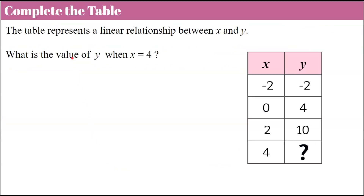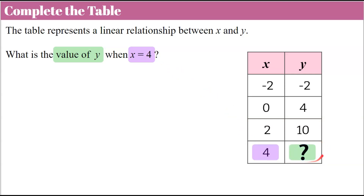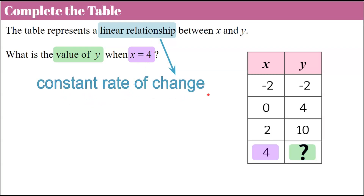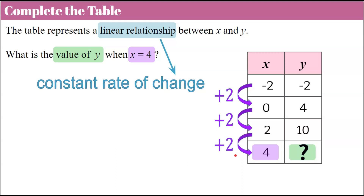Let's go on and talk about completing the table. This table models a linear relationship. We're told the table represents a linear relationship between X and Y, and we're asked: what is the value of Y when X is equal to 4? We want to identify where X equals 4 and find its corresponding Y value. A linear relationship always has a constant rate of change. Looking at X: negative 2 to 0 is an increase of 2, 0 to 2 add 2, 2 to 4 another increase of 2. X values are increasing at a constant rate of 2.